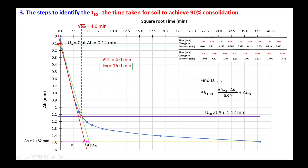Before proceeding to calculate the coefficient of consolidation cv, we also need to identify u at 100 percent. Use the following calculation: delta h at 100% = (delta h at 90% − delta h at 0%) ÷ 0.90 + delta h at 0% = (1.12 − 0.12) ÷ 0.90 + 0.12 = 1.24 mm. Locate 1.24 on the y-axis and draw a horizontal line — this is the line for u = 100%. We now have u = 0%, u = 90%, and u = 100% all identified on the plot.